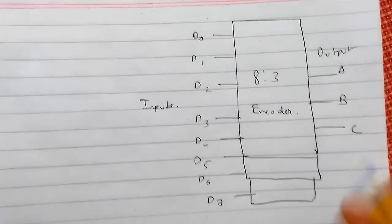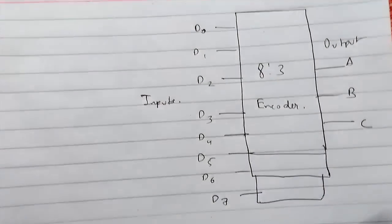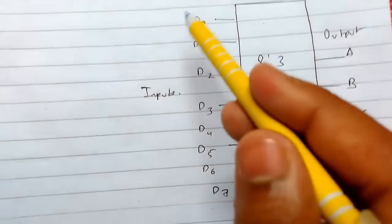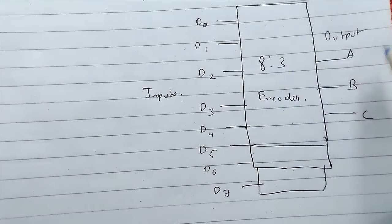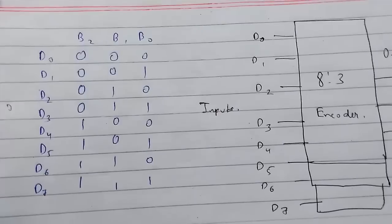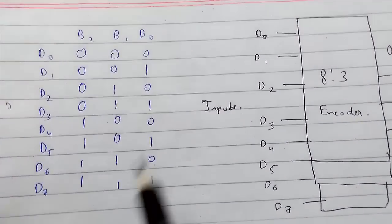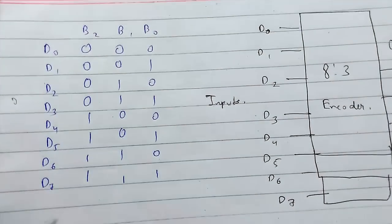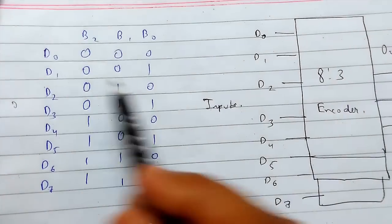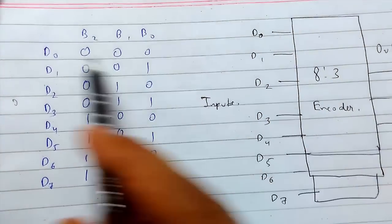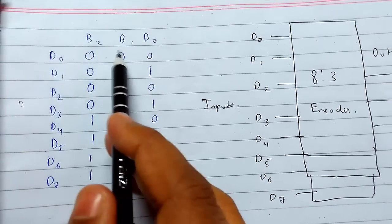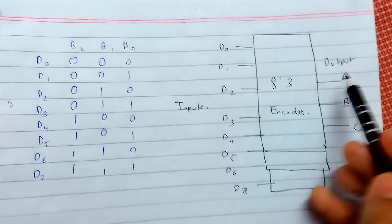Now we are studying the 8-to-3 encoder, so we will be having 8 inputs and 3 outputs. I have just made a truth table for it — there are 8 inputs and 8 combinations, and if you select a given input, the output will be like shown.